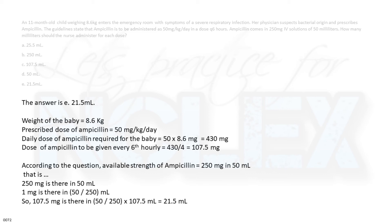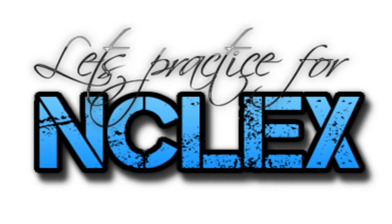According to the question, the available strength of ampicillin equals 250 mg in 50 ml. That is, 250 mg is in 50 ml, so 1 mg is in 50 over 250 ml. Multiplying by 107.5 gives 21.5 ml.